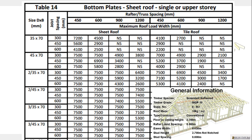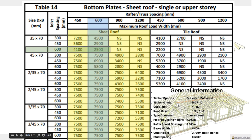Here's our table. We've got truss spacings and a sheet roof section, so we can look at the sheet roof column. Truss spacing 600, so we go down that column, and joist spacing 600, so we use the 600 row. The table says we can use 35 by 70, so we're confirmed on that.